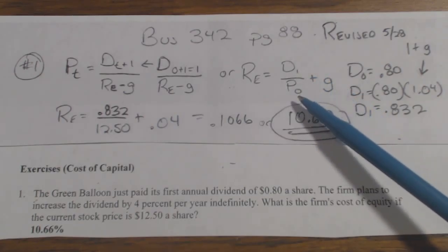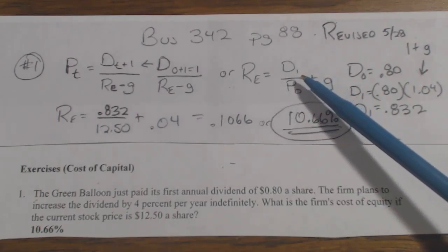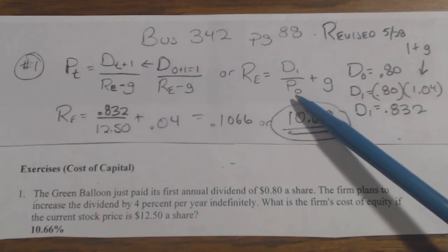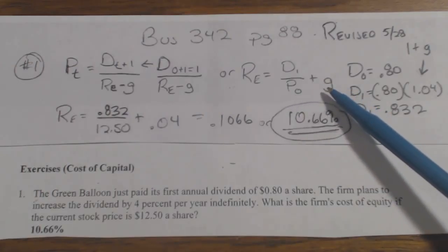It is D1, which is dividend 1, over P0, which is the current price, plus the growth rate.